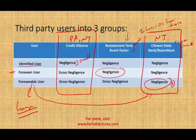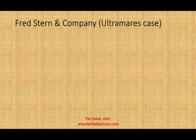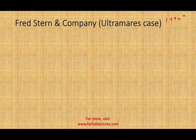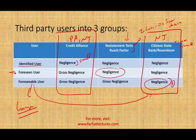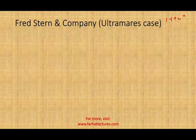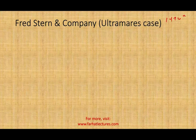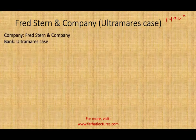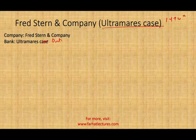The concepts of identified, foreseen, and foreseeable users started with a case called Fred Stern and Company — the Ultramaris case — from the 1920s. Prior to this case, if you were a foreseen or foreseeable user, you could only sue the auditor under fraud, which is very hard to prove because you have to show intent.